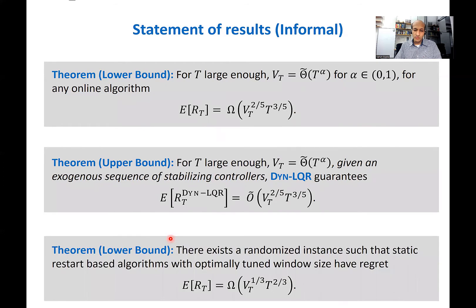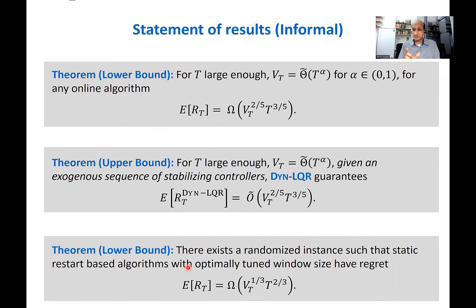We also prove a lower bound on a popular class of algorithms for control of non-stationary MDPs: static window-based restarting algorithms. In these heuristics, we pick a window size and every fixed number of steps, forget everything that has happened and restart a stationary version of the learning and control algorithm. We prove that for the LQR problem, even if the window size is tuned optimally with knowledge of the variation of the input parameters, it cannot match the optimal regret guarantee of our algorithm. So in a strong sense, this class of heuristics is suboptimal.